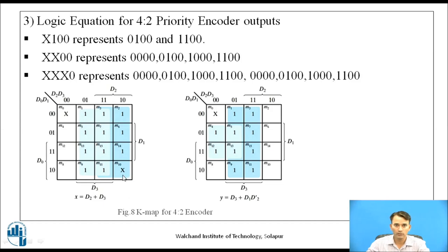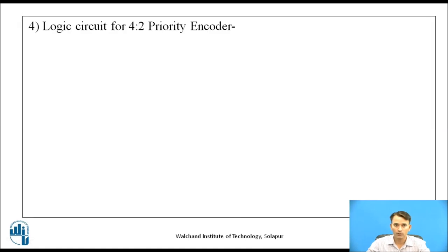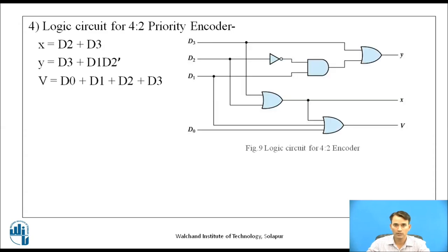By placing ones and don't cares in the K-map, we obtain two octets: one gives d2 and the other gives d3, so x = d2 + d3. The K-map for y gives one quad and one octet, resulting in y = d3 + d1·d2'. Based on these equations, the logic circuit for the 4-to-2 priority encoder is drawn. In this way, we can design any priority encoder.